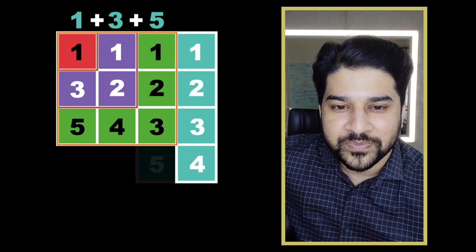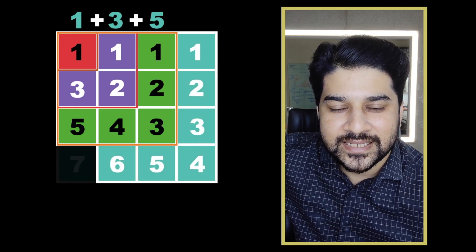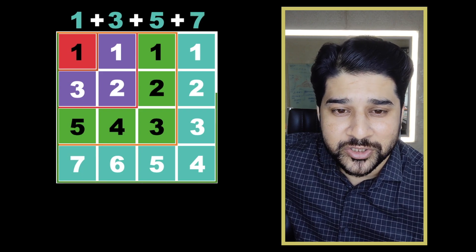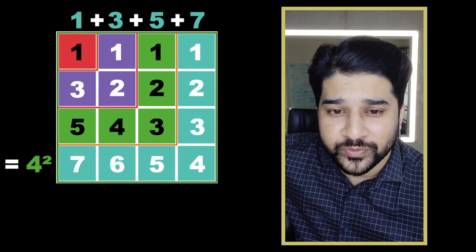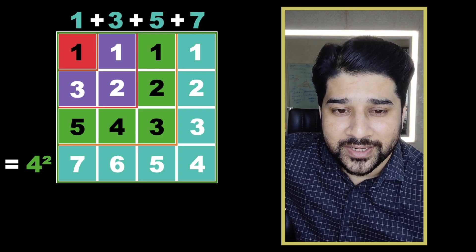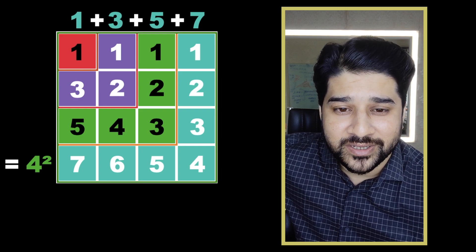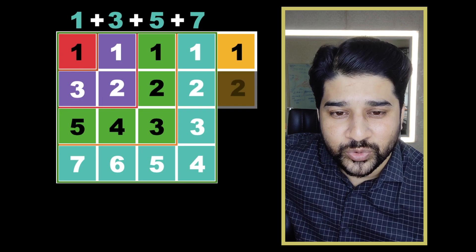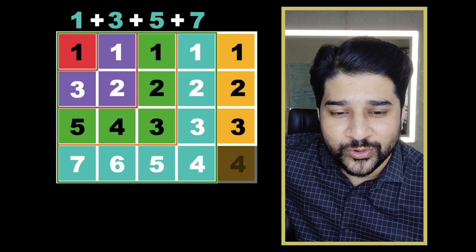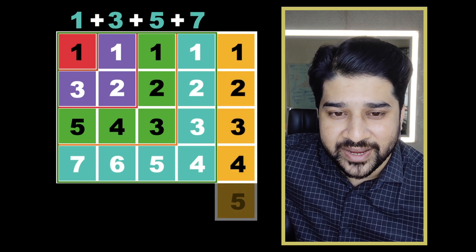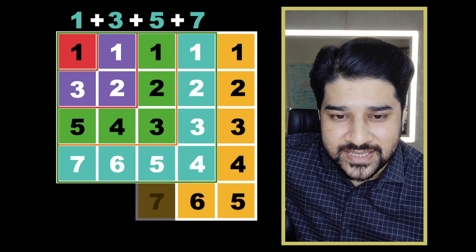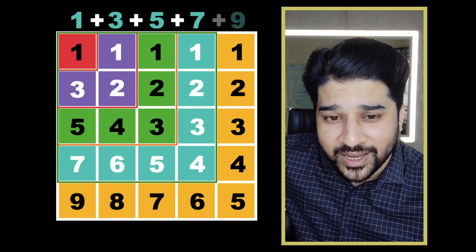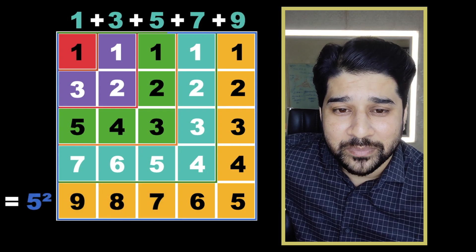Four, five, six, seven — so we needed seven more squares to build a bigger square of four by four, which is four squared. Now let's say we want to build a square of five by five, so we have one, two, three, four, five, six, seven, eight, nine — so we needed nine more squares to build a bigger square of five by five, which is five squared.